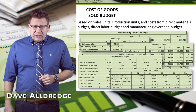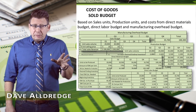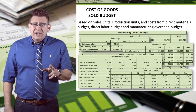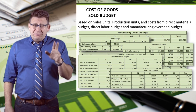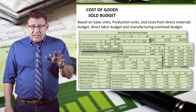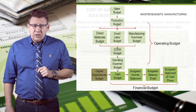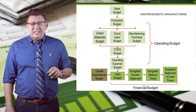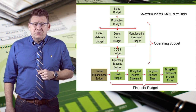The cost of goods sold budget is based on data from the sales budget, production budget, direct materials budget, direct labor budget, and manufacturing overhead budget. So obviously, it needs to be completed after all of those. The cost of goods sold budget is the sixth budget completed in the master budget process.